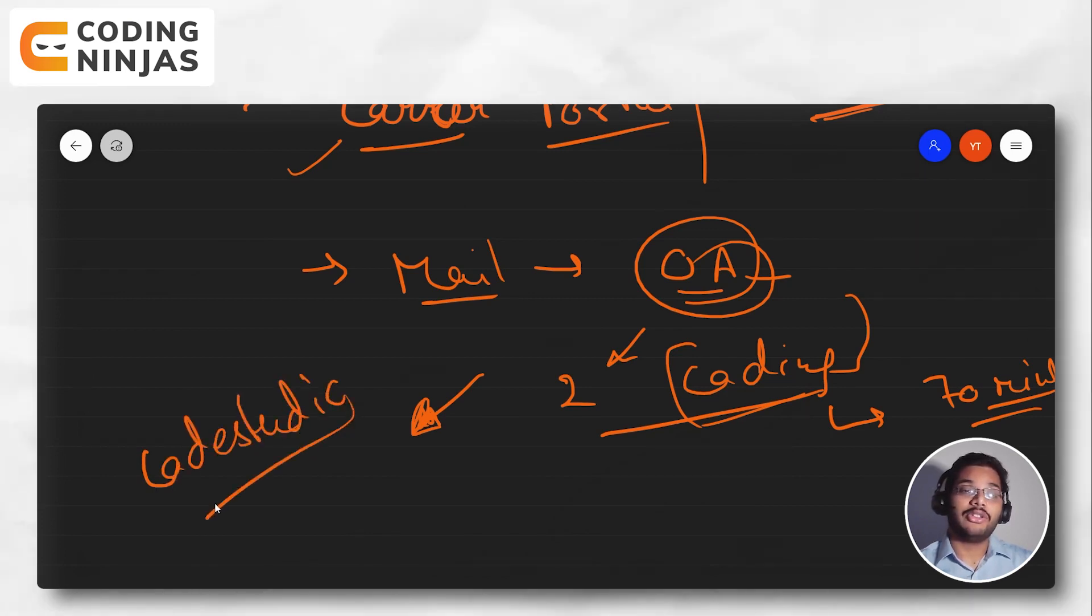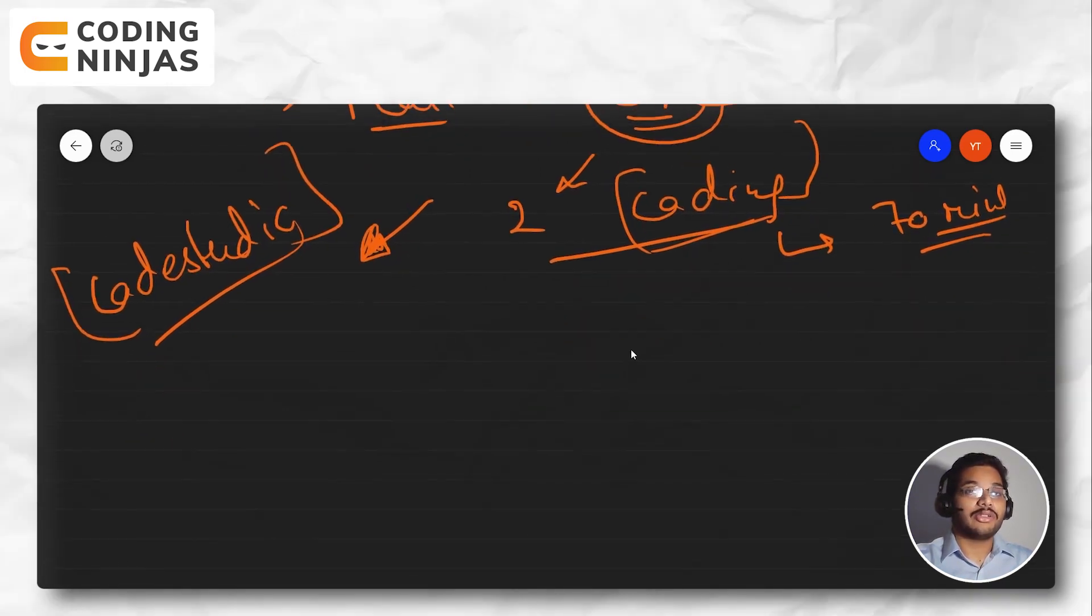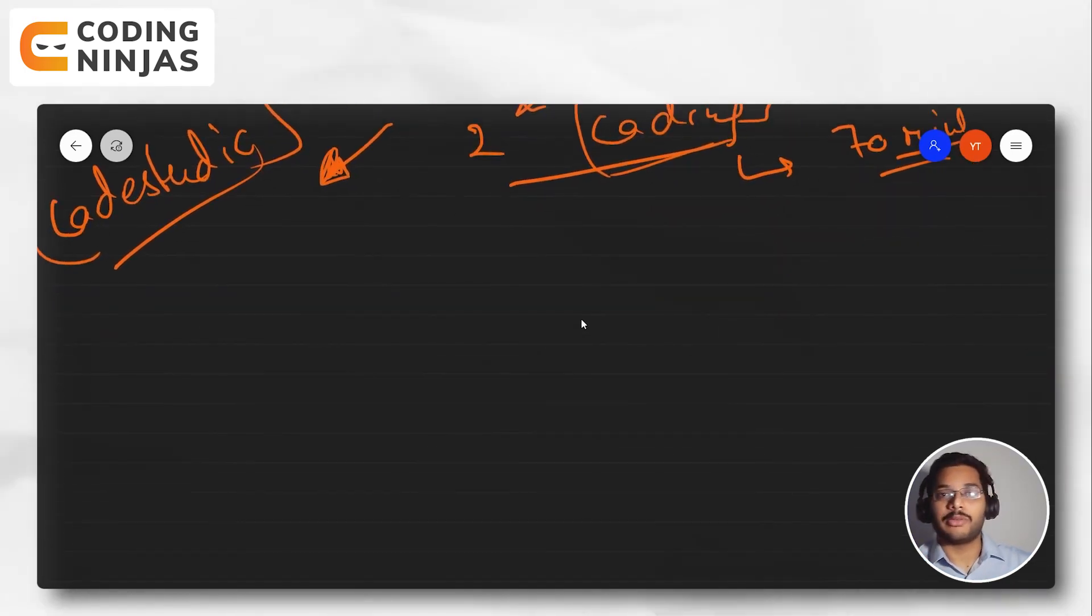Code Studio platform is maintained in such a way that there are guided paths, problem sets, top interview questions, and you can also see interview experiences. Code Studio is a one-stop solution if you're preparing for coding interviews. For the coding round, I used Code Studio and also other platforms like LeetCode and GeeksforGeeks. I had solved a lot of questions on GFG earlier, so I reviewed the toughest questions I wasn't able to solve initially and practiced them again.